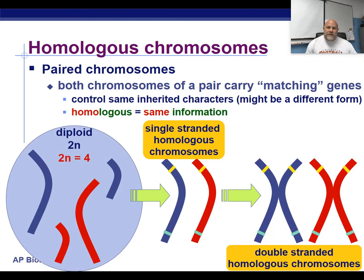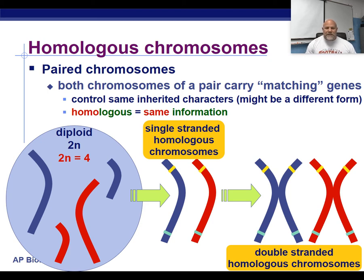Sexual reproduction is going to produce variety. And like we see with the desert whiptail lizards, there's not much variety in that species, which is fine if your environment hardly ever changes. But if you have to adapt to changes, new predators, and new conditions in your environment, it's difficult if you don't have much variation in your species.